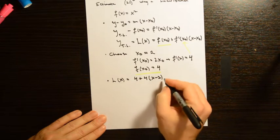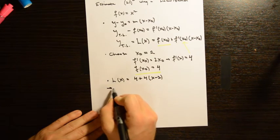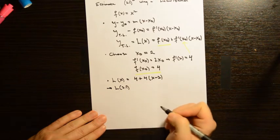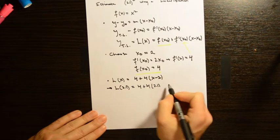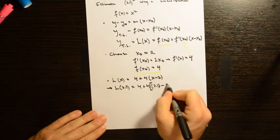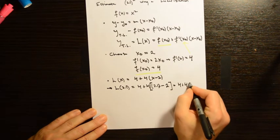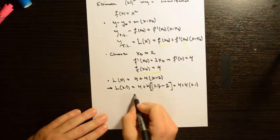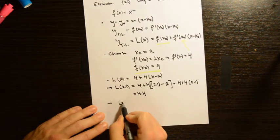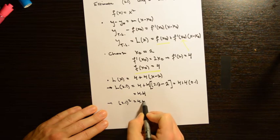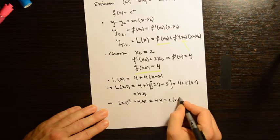We can simplify this if we want, but there's no real need. Right away we can use our linearization to estimate 2.1 squared: L of 2.1 equals 4 plus 4 times (2.1 minus 2). Now 2.1 minus 2 is 0.1, so this is 4 plus 4 times 0.1, which equals 4.4. Notice that 2.1 squared is actually 4.41, and this is approximately 4.4, which equals L of 2.1.